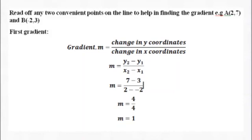Using the coordinates of A and B, we can calculate the gradient as change in y coordinates over change in x coordinates. In this case, we have (7 - 3) over (2 - (-2)), which gives us 4 over 4, which equals 1.